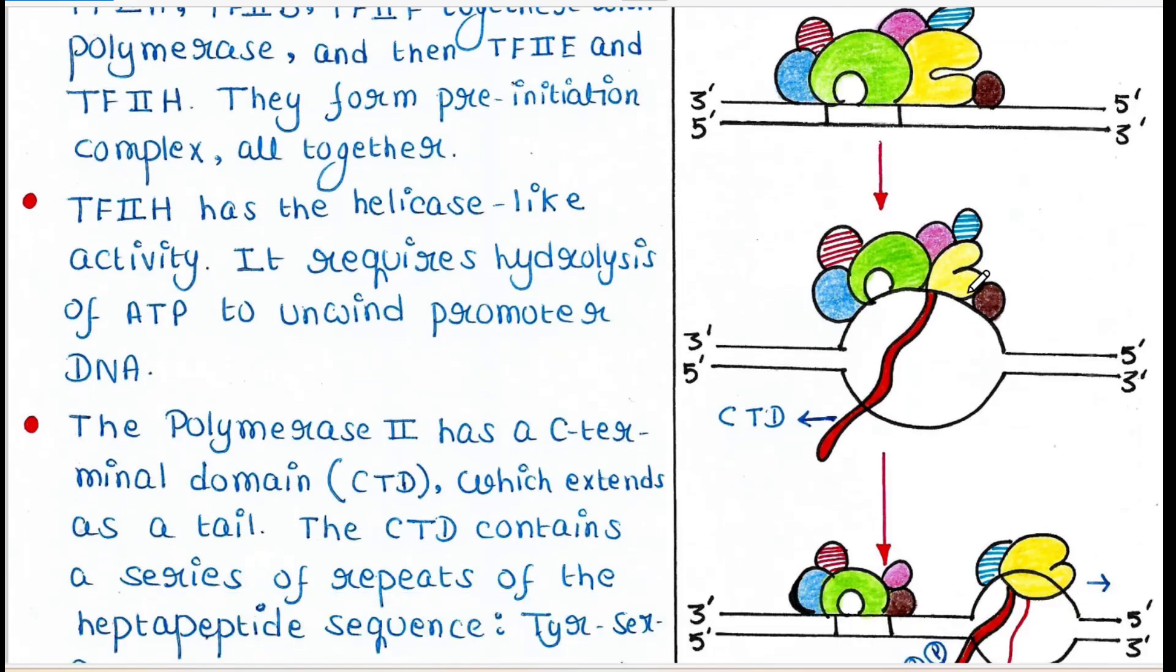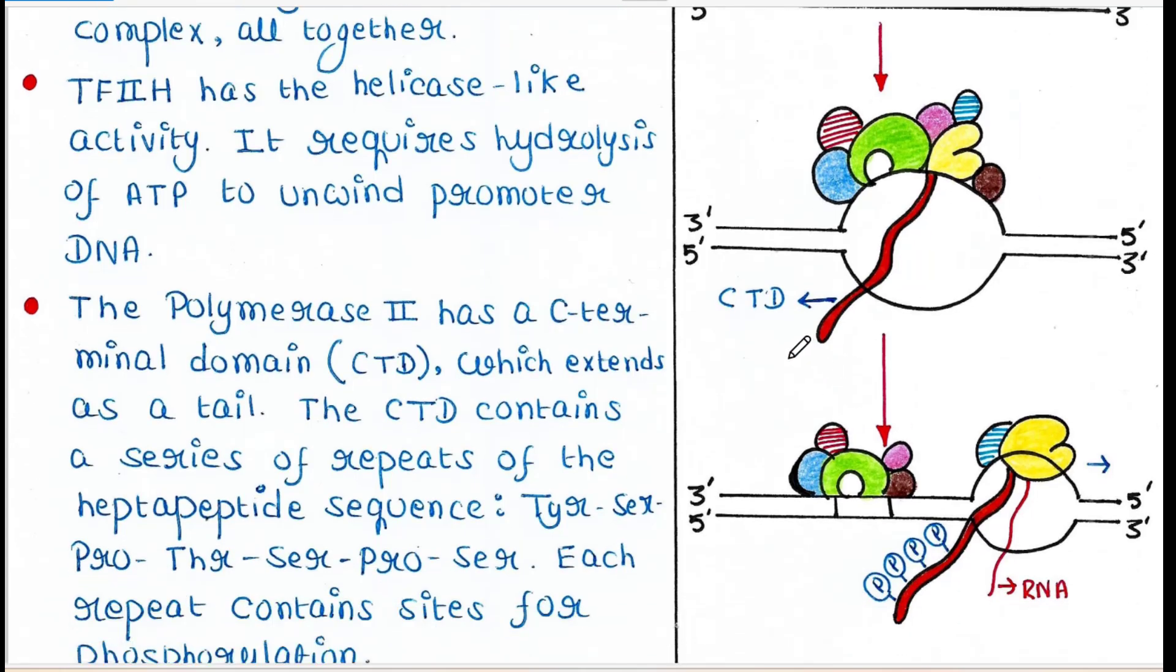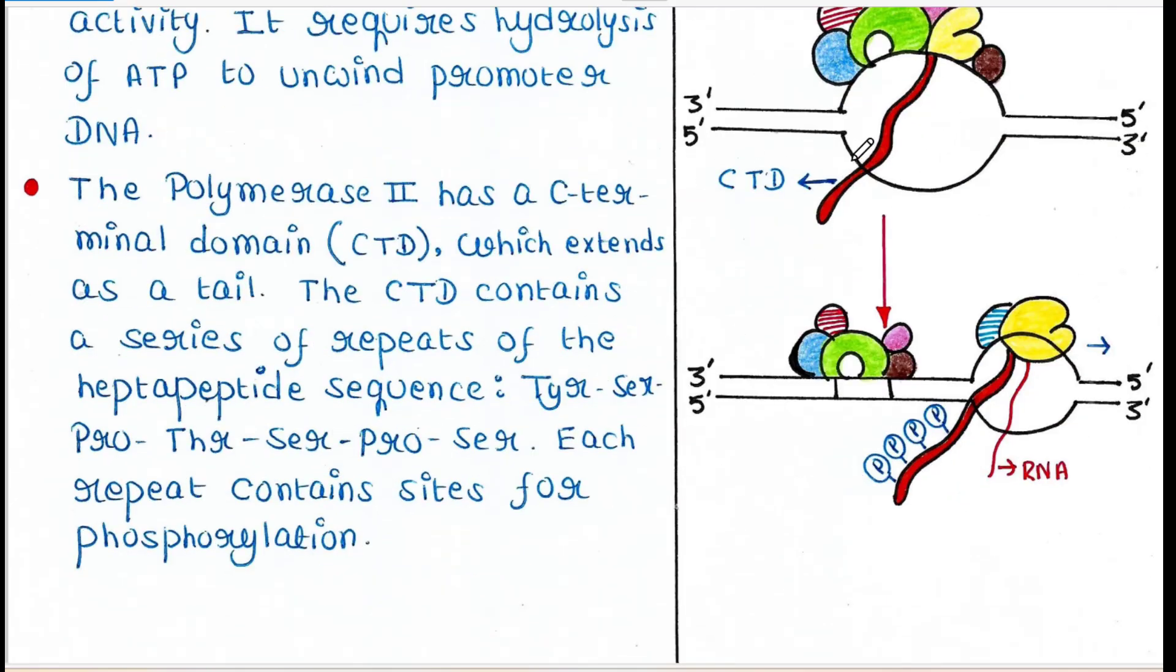The polymerase 2 has a C-terminal domain CTD which extends as a tail. The CTD contains a series of repeats of the heptapeptide sequence. Hepta means 7, so a seven amino acid sequence is getting repeated.